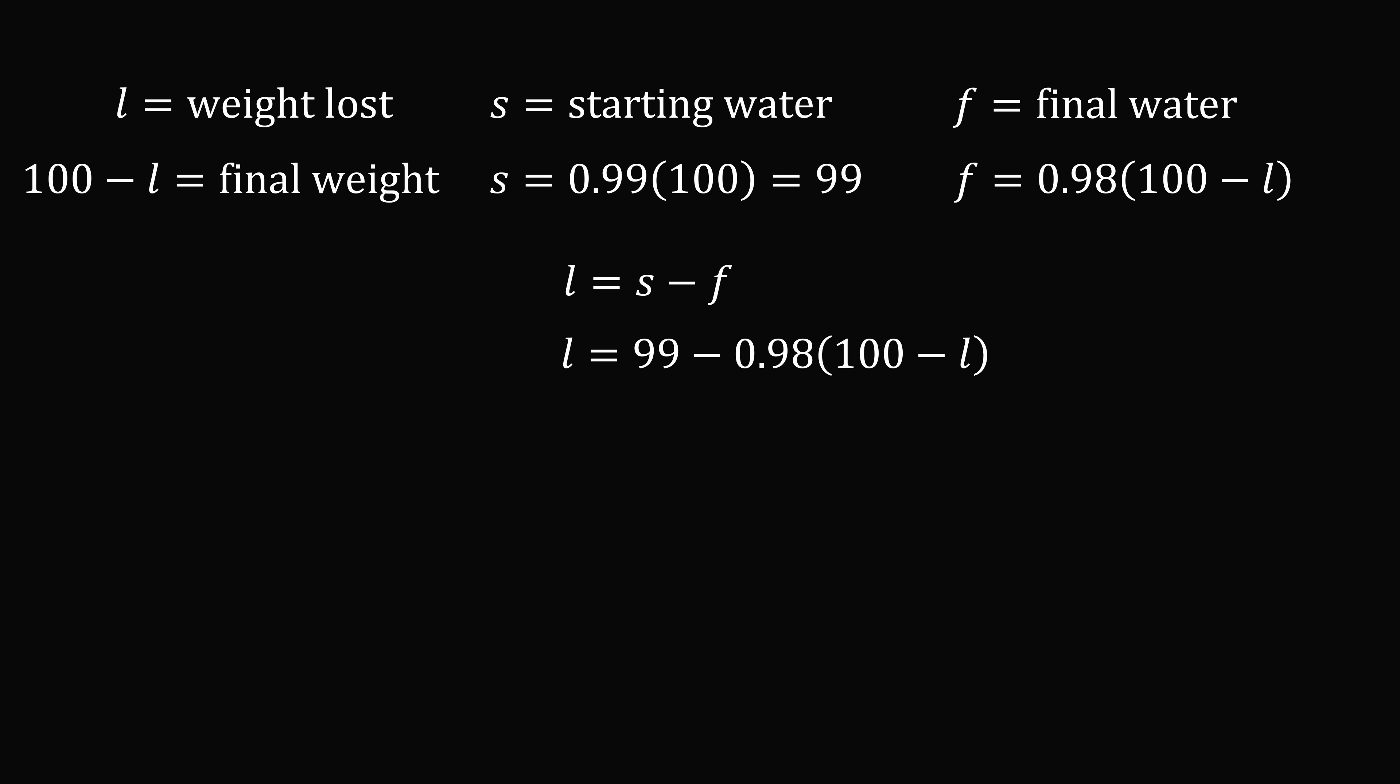We substitute in for these variables and now we just need to solve for l. So we distribute the 0.98 through. Now we just simplify: 99 minus 98 is equal to 1. Then we subtract 0.98l from both sides and finally we divide through by 0.02 to get that l is equal to 50 kilograms. So the loss is 50 kilograms and we take 100 minus 50 to equal 50. Therefore the final weight is 50 kilograms.